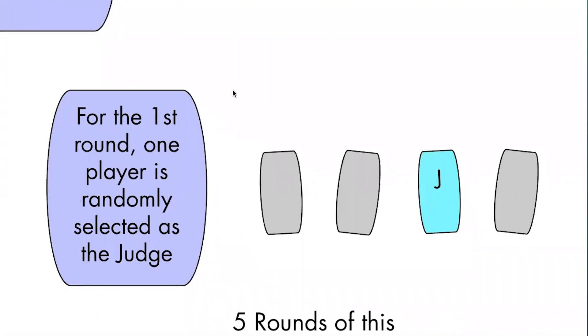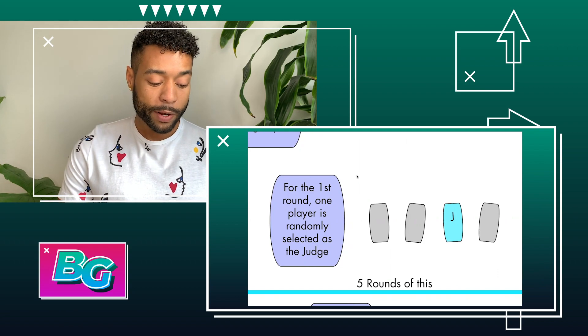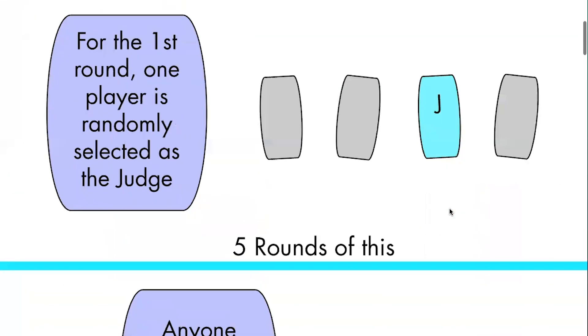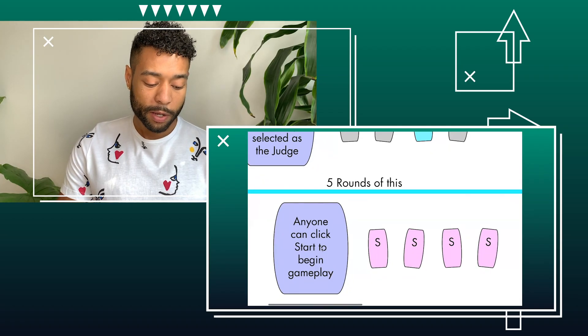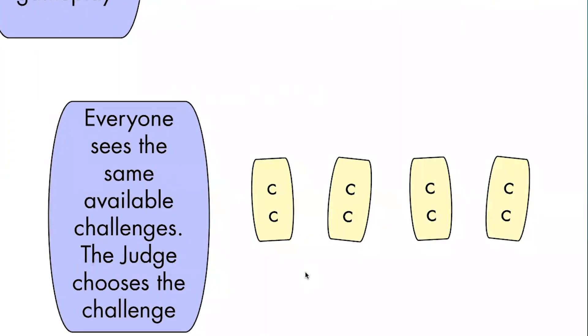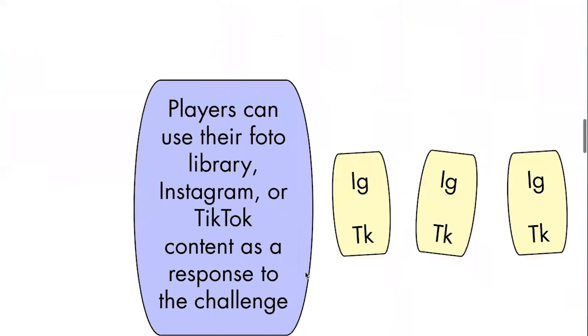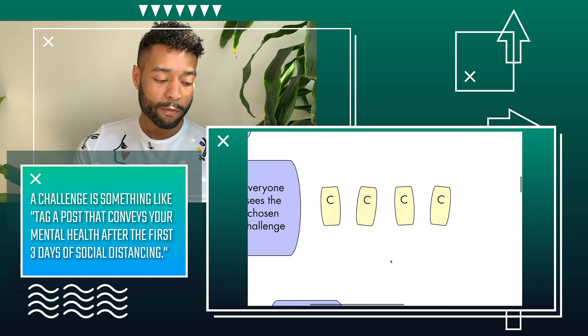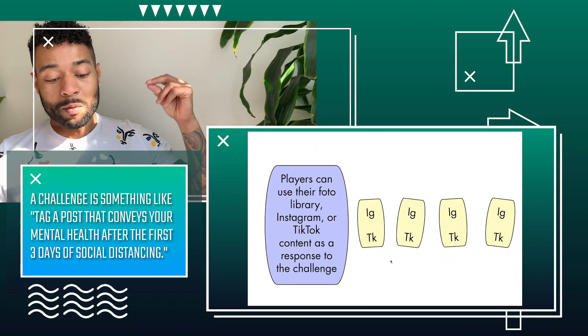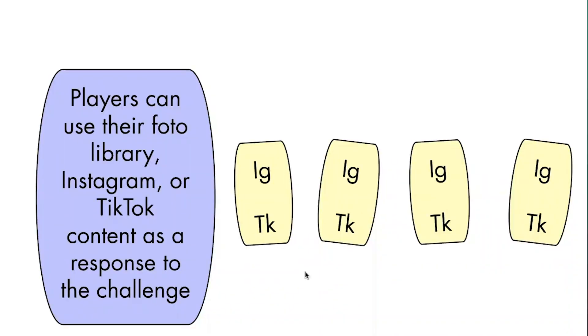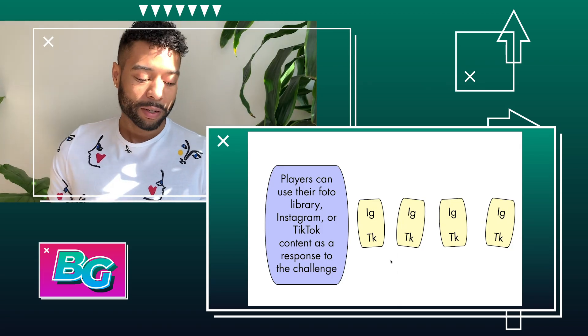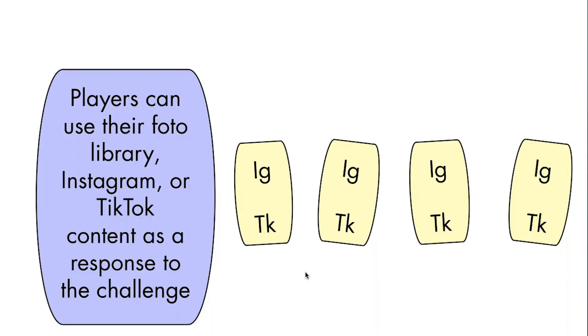Once multiple people are in the game, we get on to beginning the first round. One player is randomly selected as the judge. You have five rounds of core gameplay, and anyone can click start to begin. Everyone sees the same available challenges. The judge gets to choose the challenge, everyone sees the chosen challenge, and the core gameplay is everyone responds to the challenge with a meme from their photo library or Instagram. TikTok was considered too, but it turns out TikTok's API doesn't support pulling content in, so that's one thing that has changed.